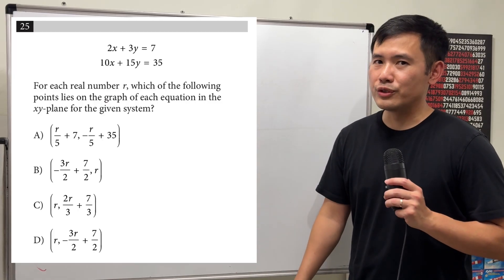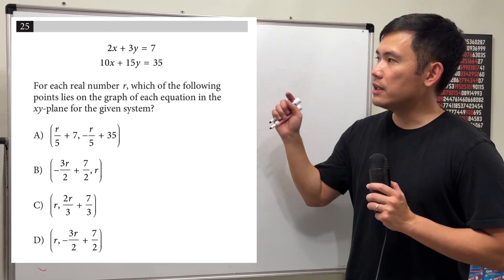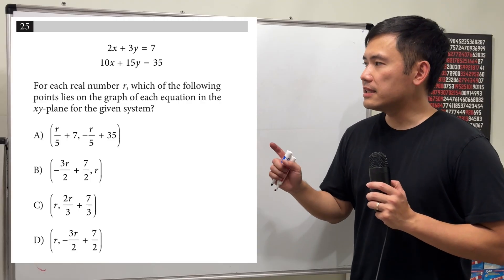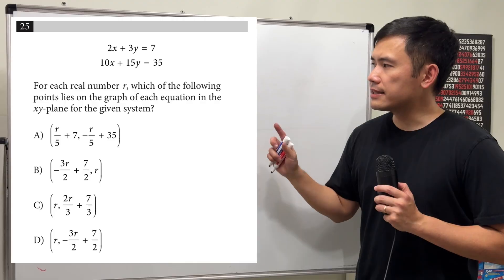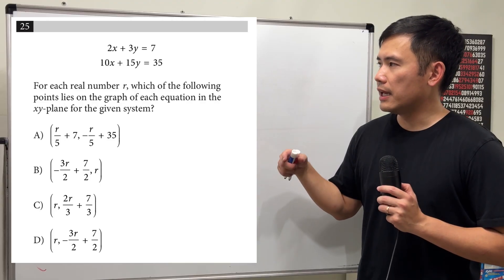Okay, this is a pretty weird question. Let's have a look. We are given a system of equations, and it says that we have a number r, and it's asking us which of the following points lies on the line.